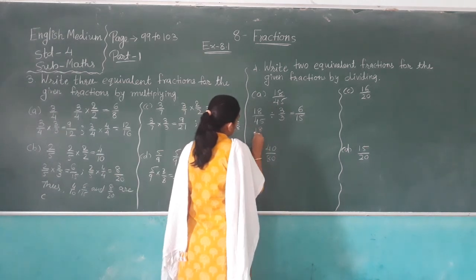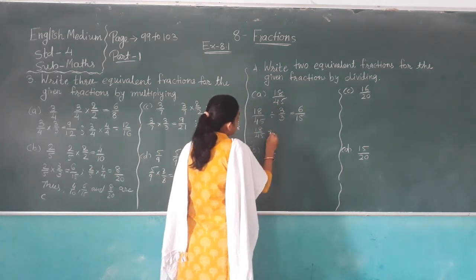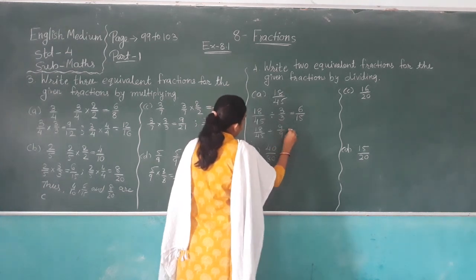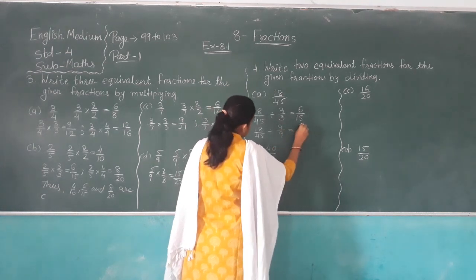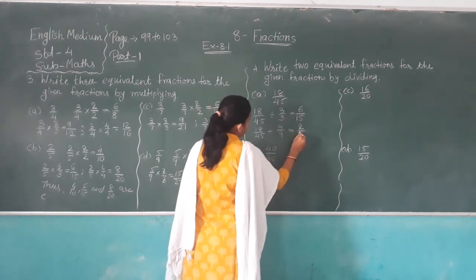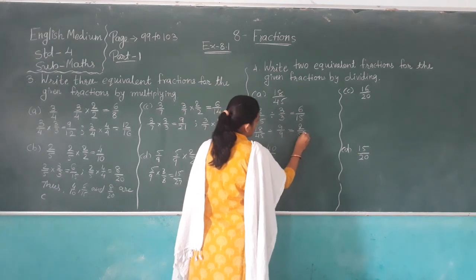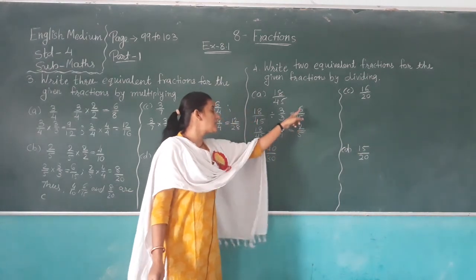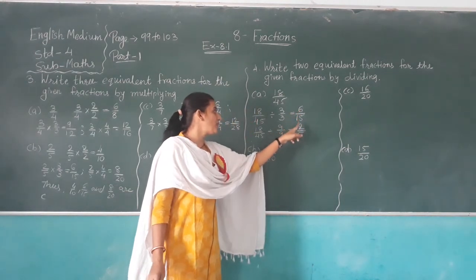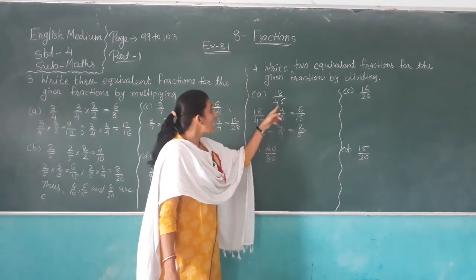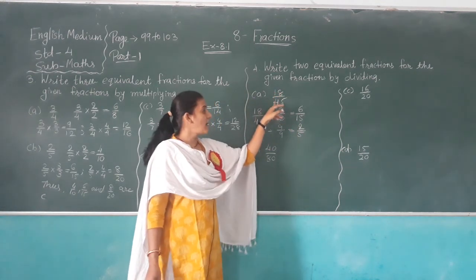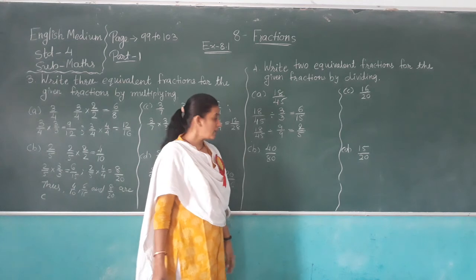Eighteen out of forty-five is also divisible by nine. Nine threes are eighteen, and nine fives are forty-five. So six out of fifteen and two out of five are equivalent fractions of eighteen out of forty-five.